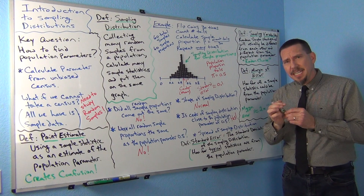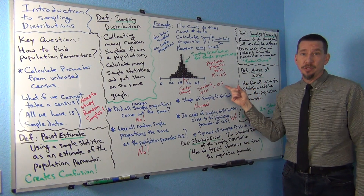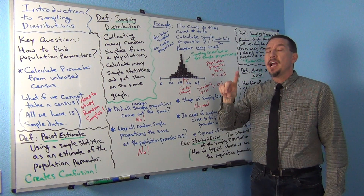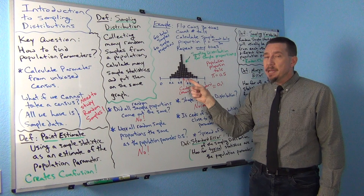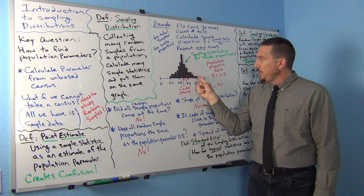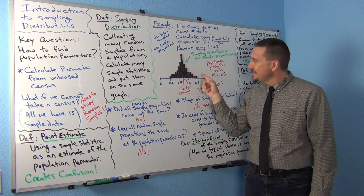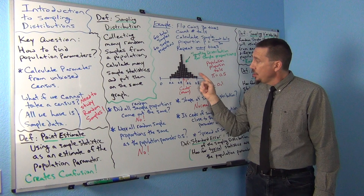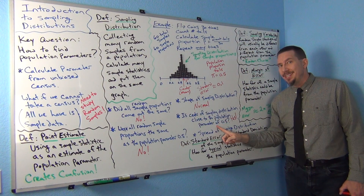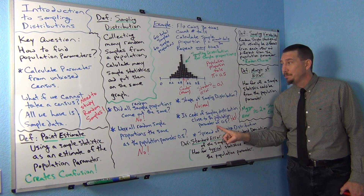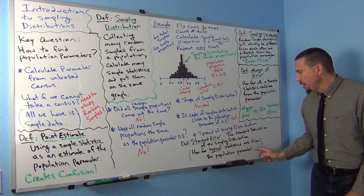Now this is really the key — what is the meaning of standard error? A lot of people know that standard error is the standard deviation of the sampling distribution, but they don't get what it's really measuring. Standard deviation measures how far typical numbers in a data set are from the mean. But in a sampling distribution, each one of these is not a number — each one is a sample statistic. So the standard error is telling me how far typical sample statistics are from the center, or the mean, of the sampling distribution. And the mean of the sampling distribution is the population parameter. So think of standard error as how far typical statistics are from the population parameter.